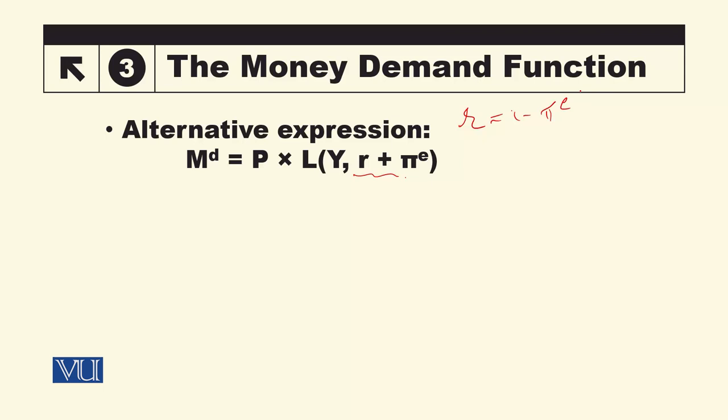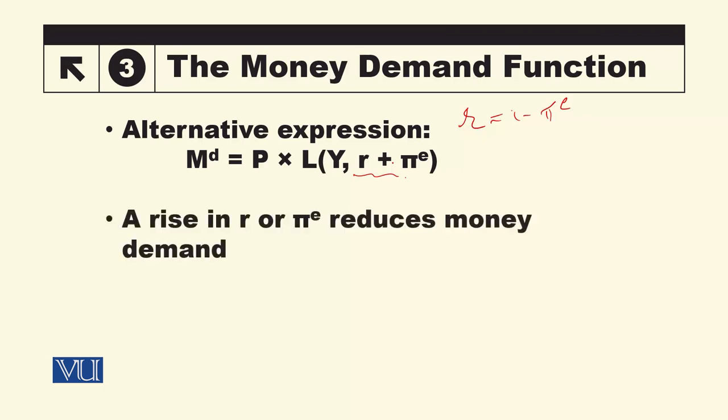You know that the real interest rate R equals the nominal interest rate I minus expected inflation. Rearranging: I = R + expected inflation. So we substitute I in the function with R plus expected inflation. Since money demand had a negative relationship with I, an increase in real interest rate R will raise I, reducing money demand. Similarly, an increase in expected inflation will also raise I and reduce nominal money demand.